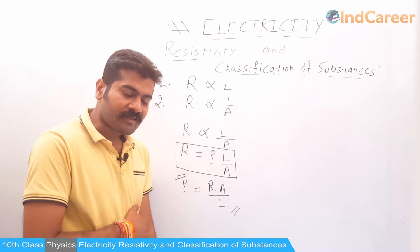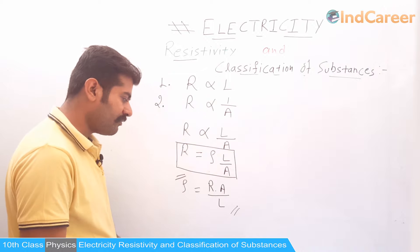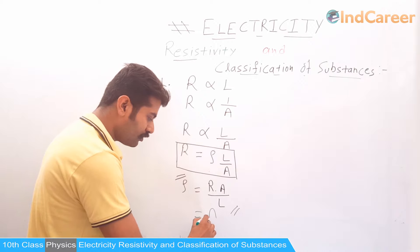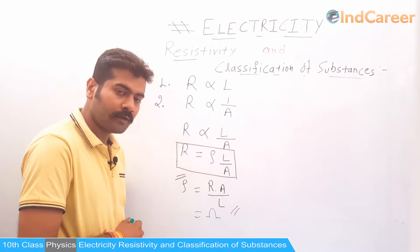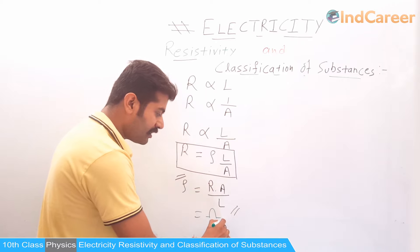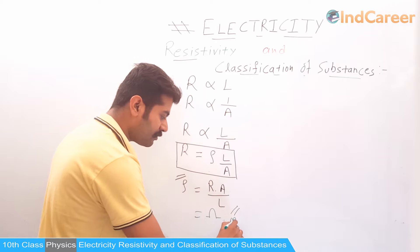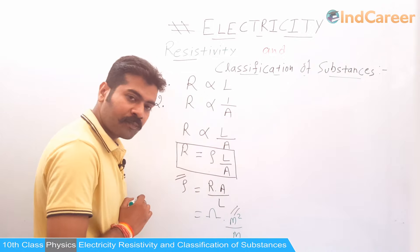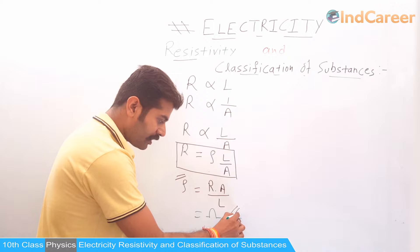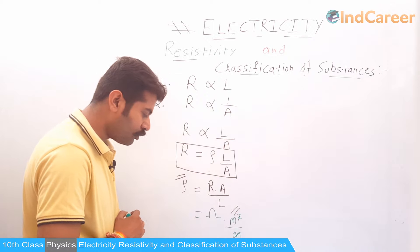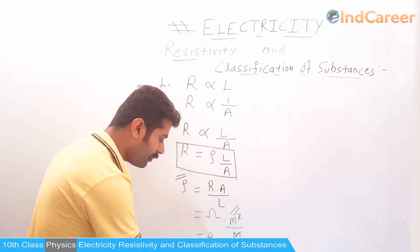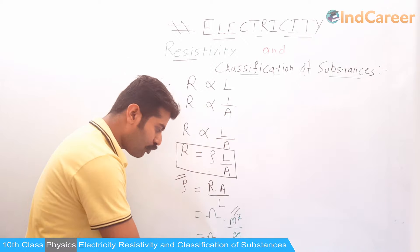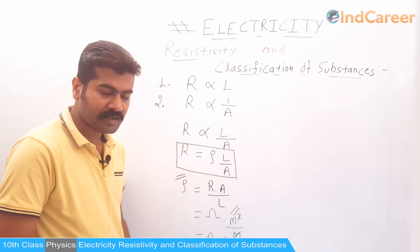What is the unit of resistivity? Resistance R is measured in Ohms, area A is measured in metre squared, and length is measured in metres. So after simplification, we can cancel one metre from numerator and denominator, giving us the unit of resistivity as Ohm-metre. This is the SI unit of resistivity.